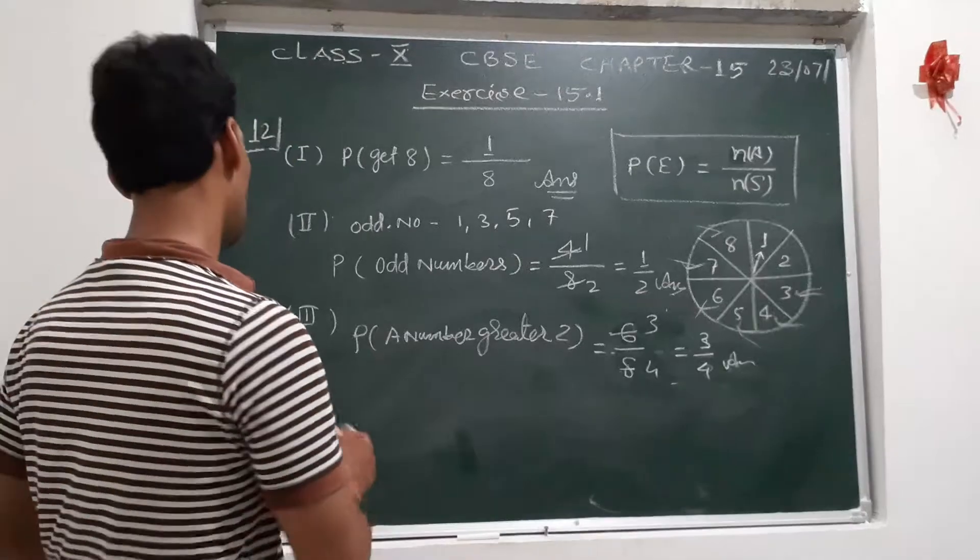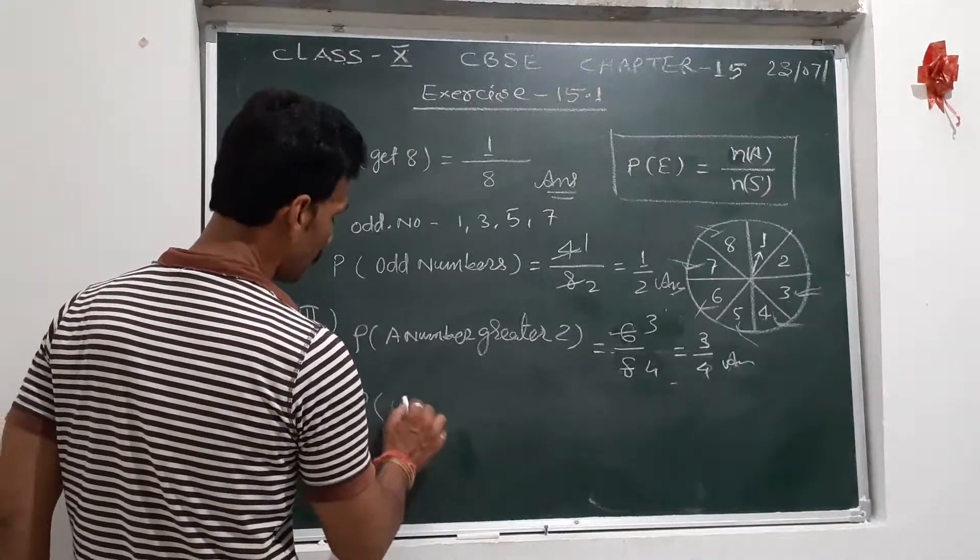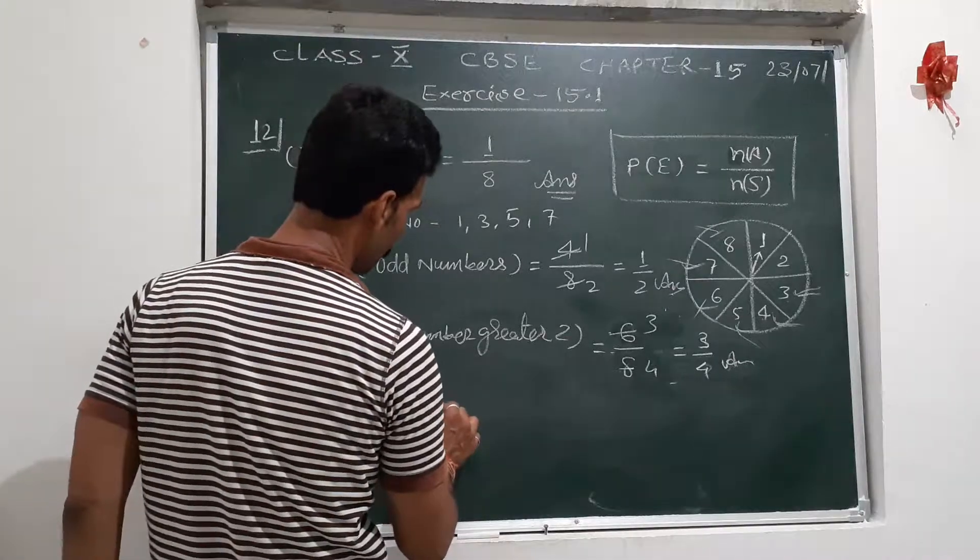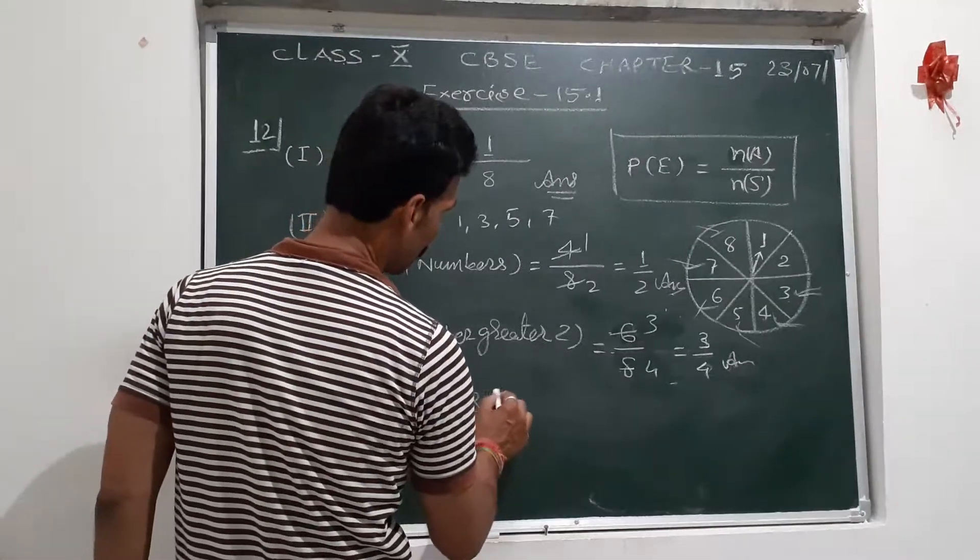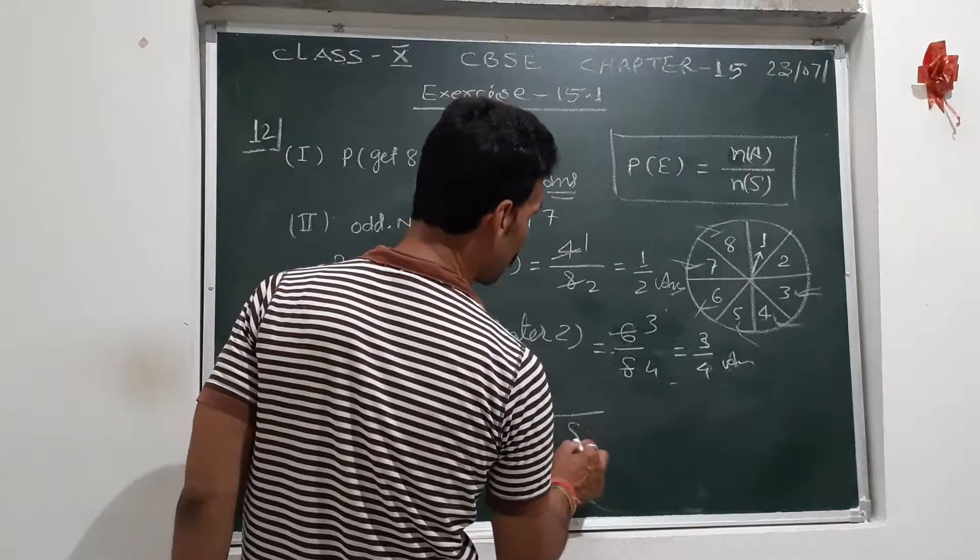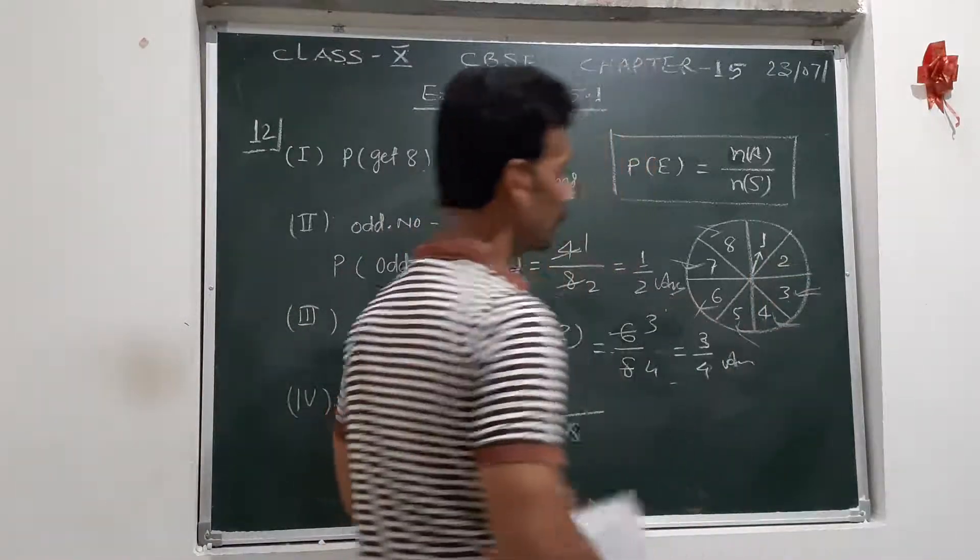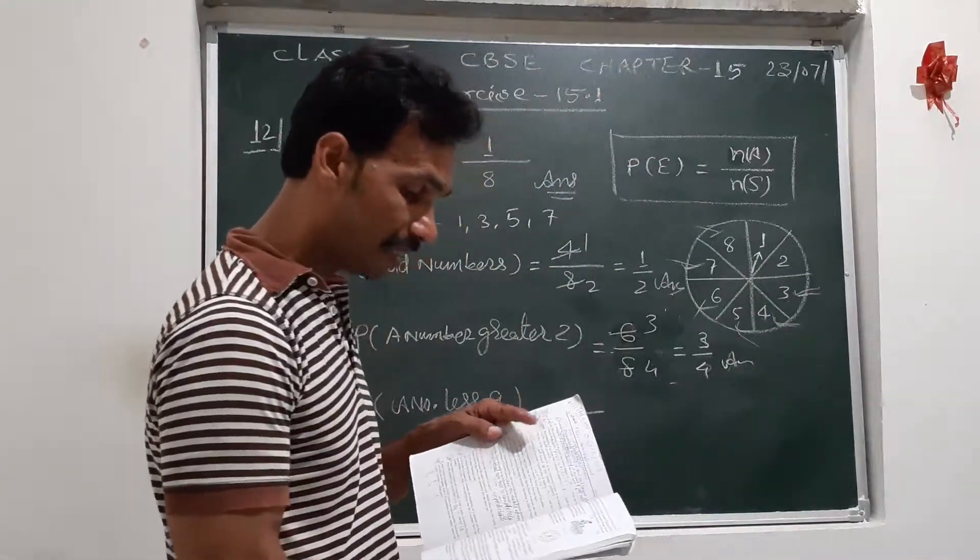Then, next question: a number less than 9. Very good question. A number less than 9. So now, how many numbers are less than 9?